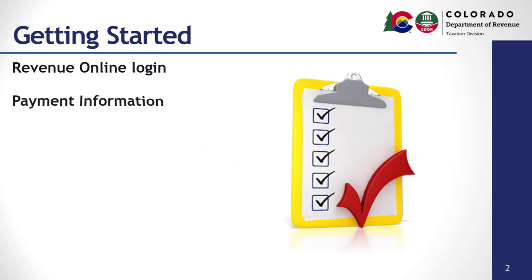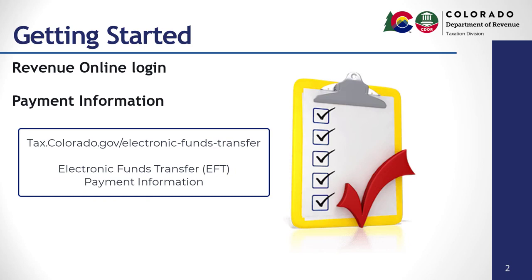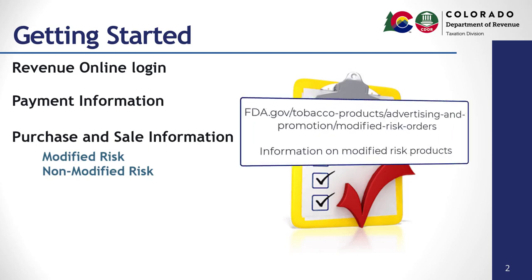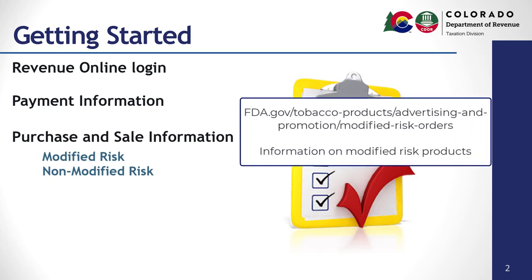You will also need your Electronic Funds Transfer, or EFT, information to make your payment. For more information on using EFT for payment, please visit our website at tax.colorado.gov/electronic-funds-transfer. Ensure all of your purchase and sales information is separated by modified risk and non-modified risk goods. More information on modified risk products is available on the FDA website at FDA.gov/tobacco-products/advertising-and-promotion/modified-risk-orders.